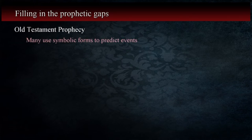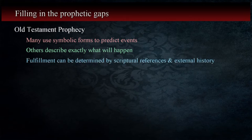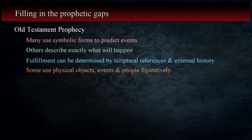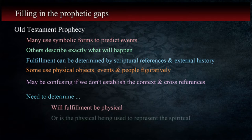In the Old Testament, there are many prophecies that use symbolic forms to predict events and describe the actions of God. Other prophecies are more direct and describe events in terms of exactly what will happen. The fulfillment of these can be determined through researching the scriptures and sometimes verified in historical records when it involves nations outside Israel and Judah. On the other hand, there are a number of prophecies that utilize physical objects, events, and even people in a figurative manner. This may be confusing if we don't establish the context of the prophecy and cross-reference it with other passages. What we need to determine is whether the fulfillment will be of a physical nature or if what is being discussed uses the physical to represent the spiritual. That's a hard concept to grasp, and it's the reason why there are misunderstandings of these prophecies that sometimes lead to doctrinal errors.